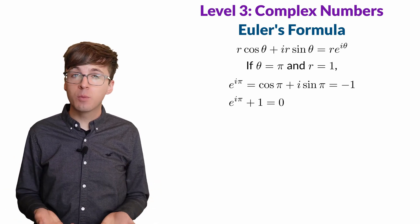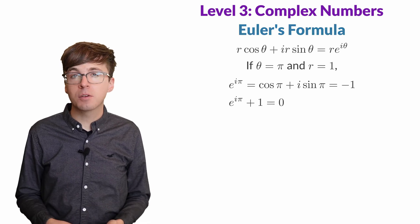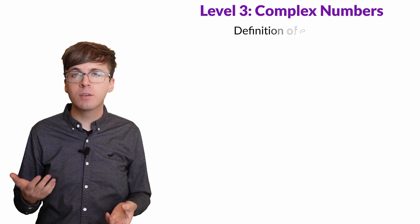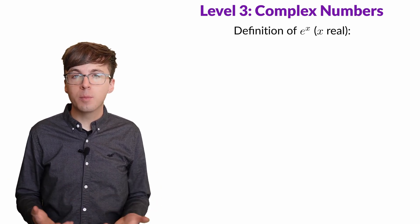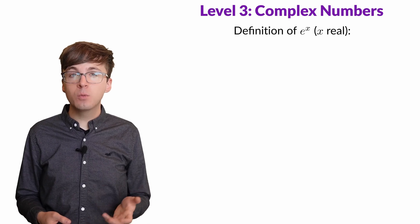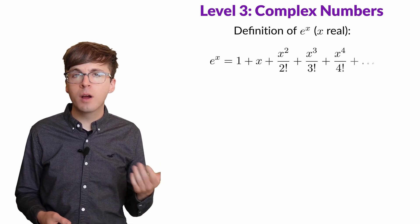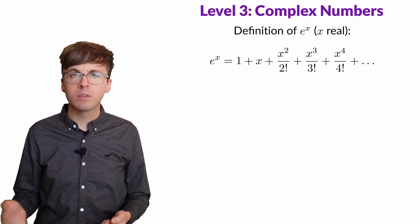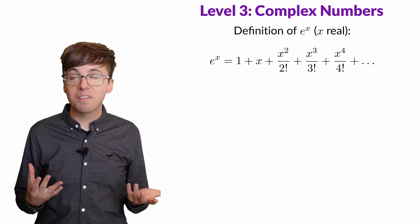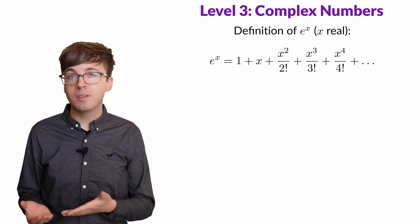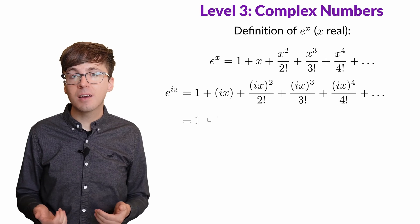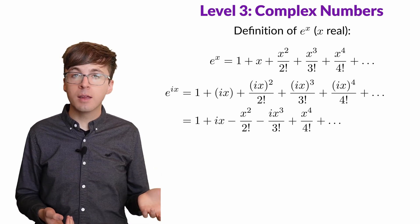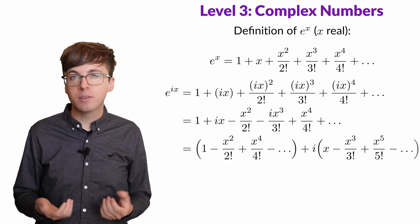We can actually give a quick proof of Euler's formula using a few facts from calculus. We'll need to explain what we mean by e raised to a complex number. One way to define this is to use the power series. From calculus, we know that e^x is 1 + x + x²/2! + x³/3! and so on. We can use this as the definition of what it means to raise e to a complex number. Now e^(ix) looks like this.